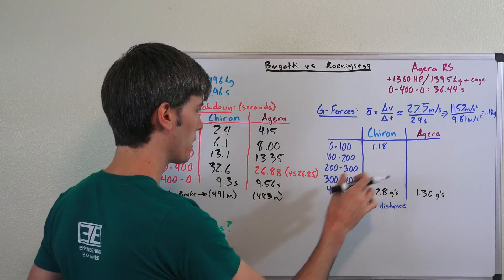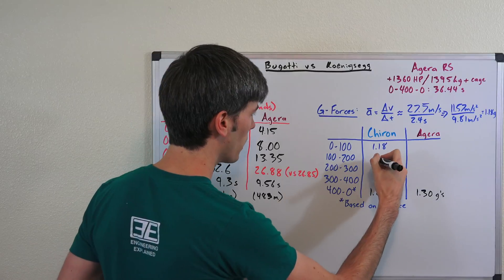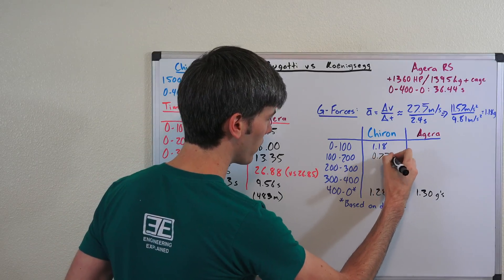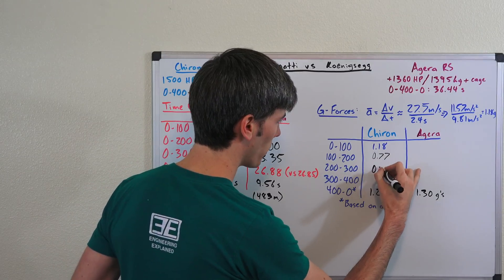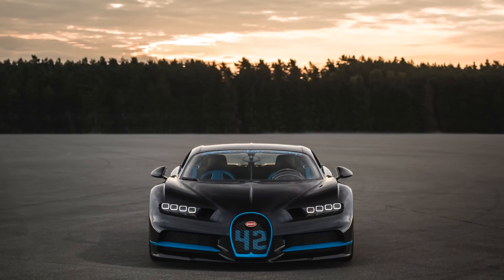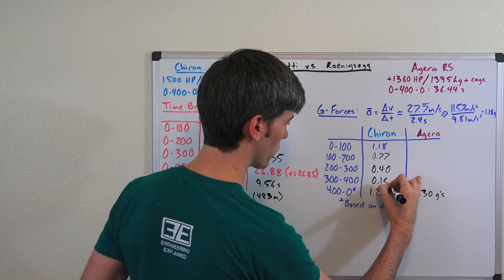Now we can fill in the rest of these for the delta of 100 kilometers per hour to 200 kilometers per hour. The Bugatti averaged 0.77 g's, from 200 to 300 it averaged 0.4 g's and from 300 to 400 it averaged 0.15 g's.